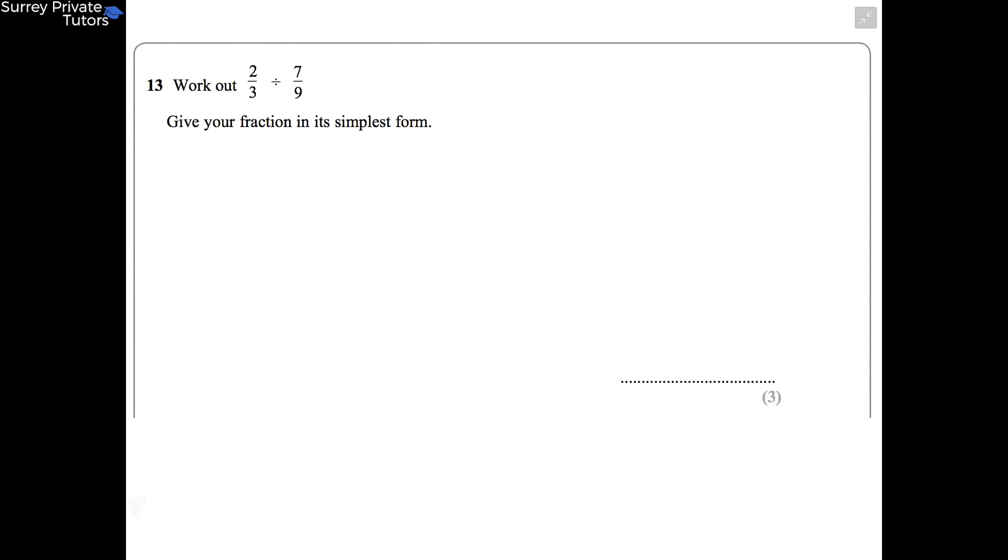Right, let's look at an example exam question, and this is typical of the sort of question you might get on fractions. This question says work out 2/3 divided by 7/9, and they want the fraction in its simplest form, so this is usually what they ask for when your answer is going to be a fraction. So hopefully you remember that the first step is to flip your second fraction and then change the division sign to a multiply sign. So you get 2/3 still, and it's multiplying instead of divide.